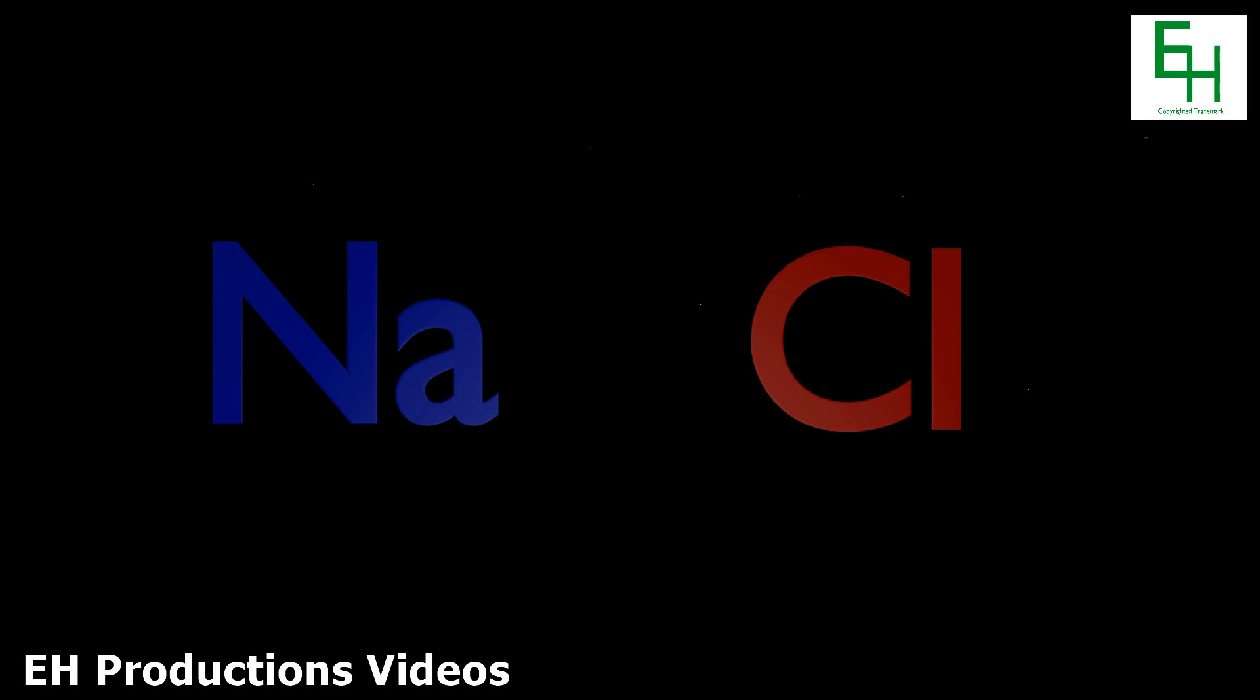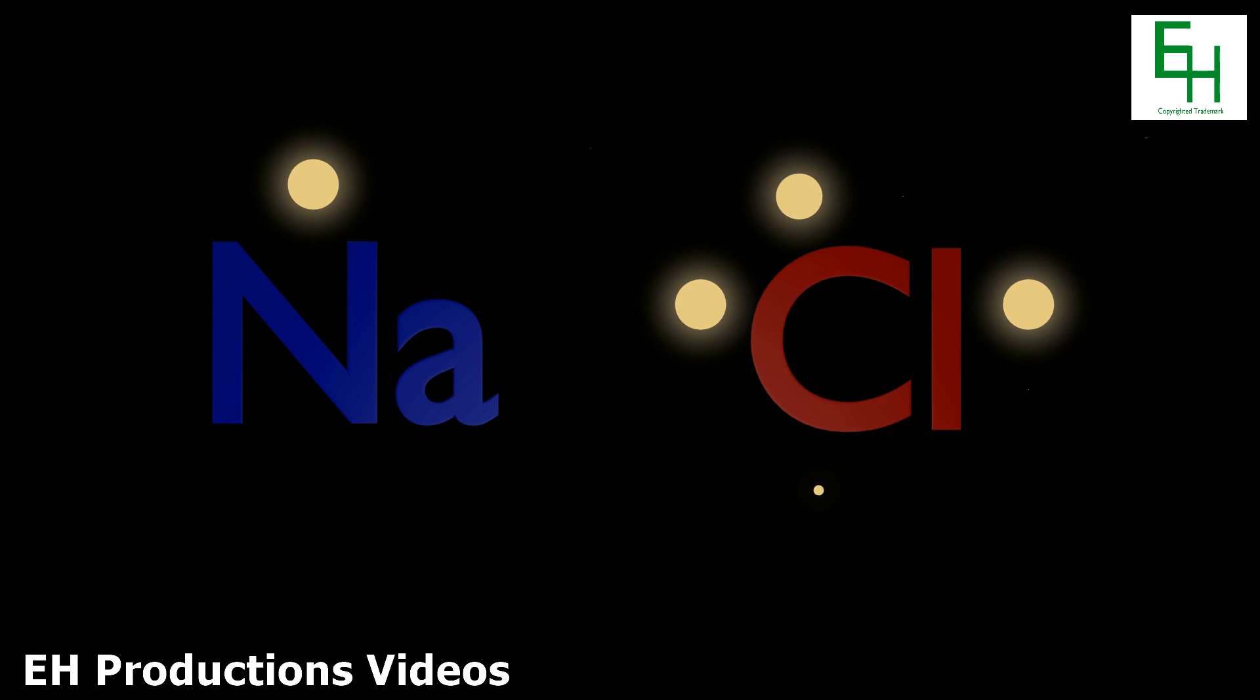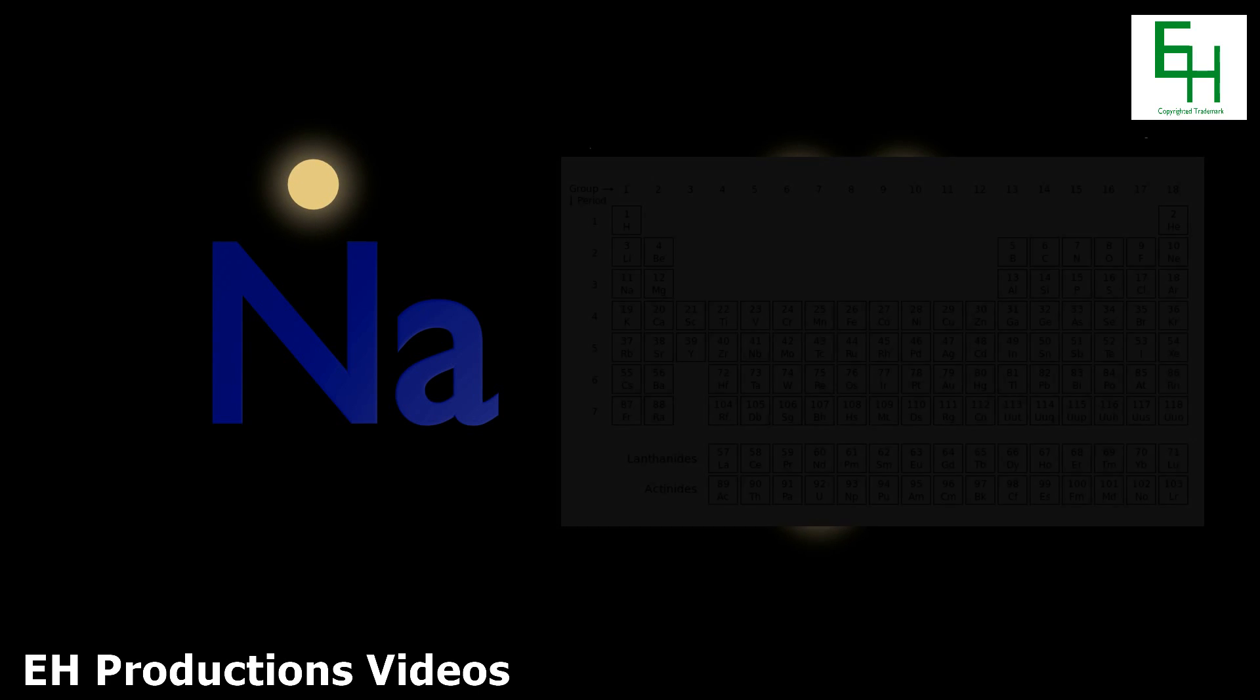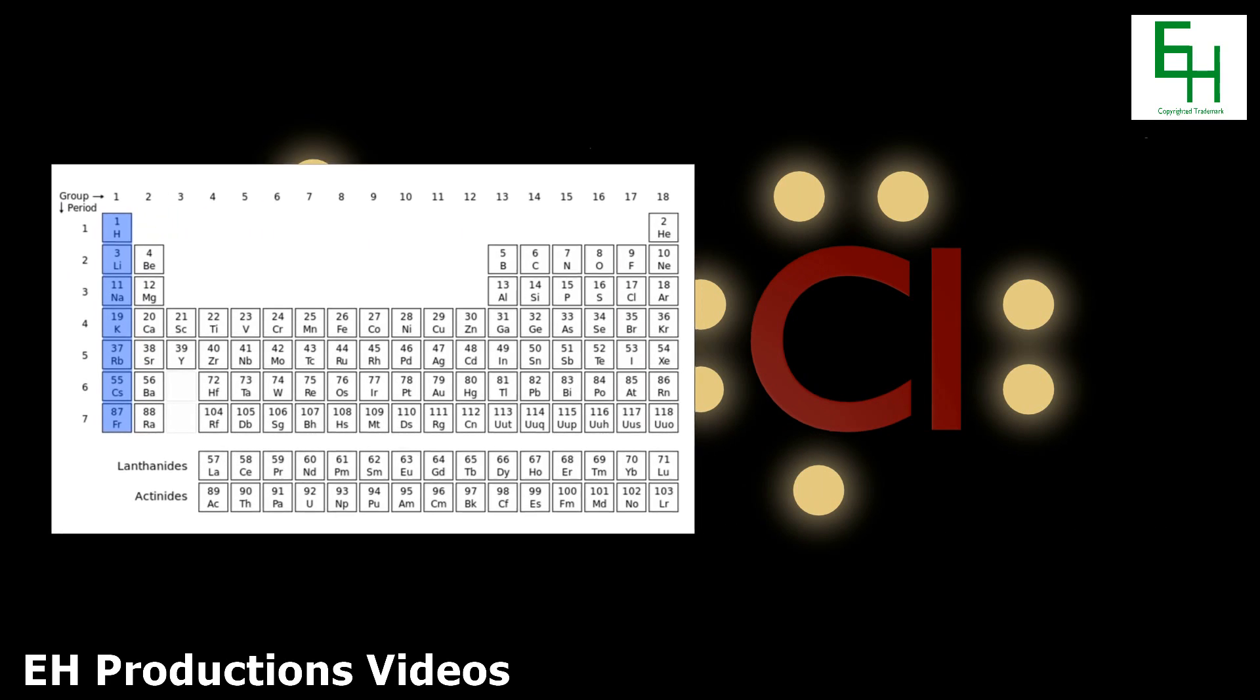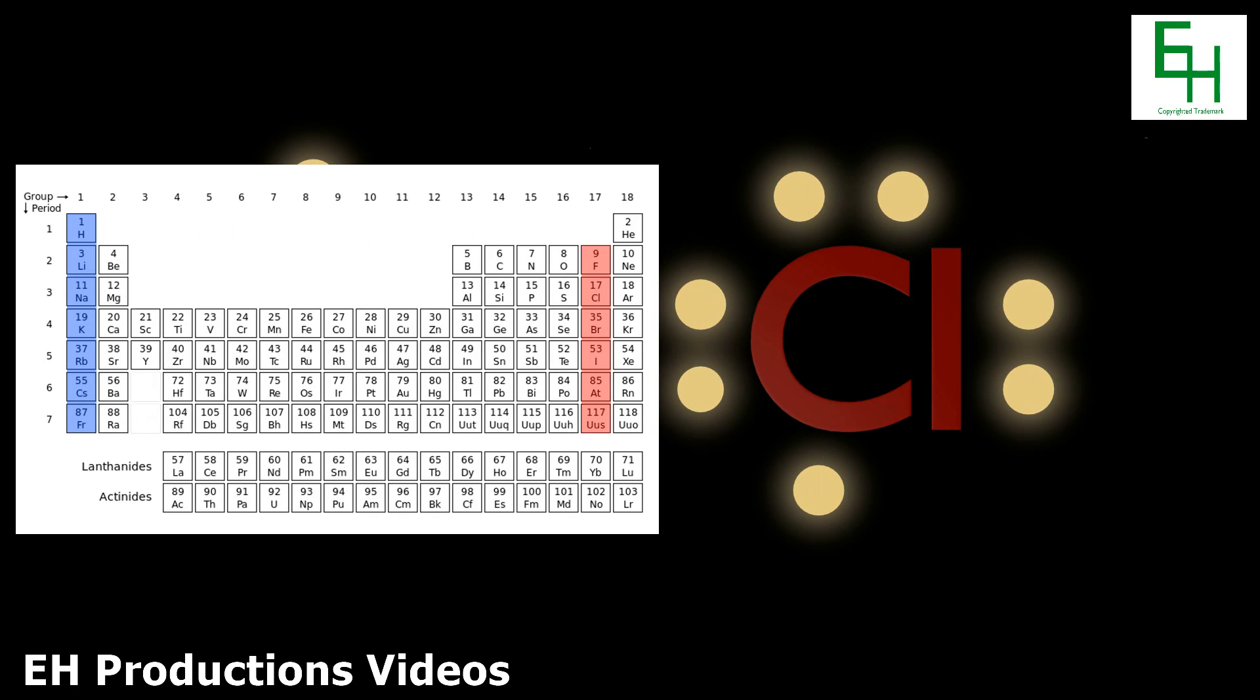Today's example will be sodium chloride. So here are the Lewis dot diagrams for sodium and chlorine. As you can see, sodium, like other group 1 elements, have 1 valence electron, and chlorine, like other group 17 elements, have 7 electrons.